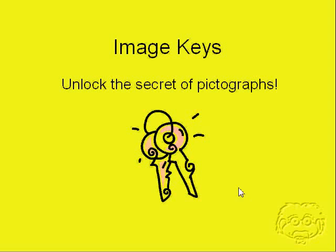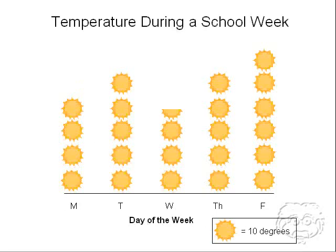What's a pictograph, you ask? A pictograph uses symbols or pictures to represent quantities of data, and it's kind of like a bar graph. You can see here that this pictograph shows the temperature during a school week for each day. The image key is at the bottom right corner — it's that little box with the sunshine in it — and it says a sunshine equals 10 degrees. That means every sunshine on the pictograph represents 10 degrees.